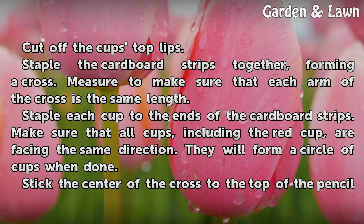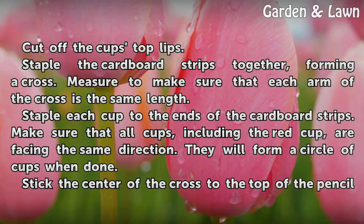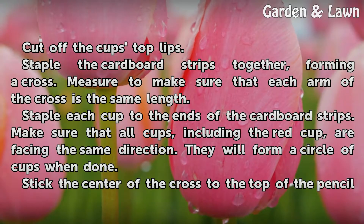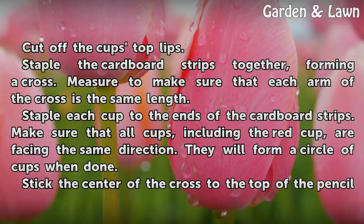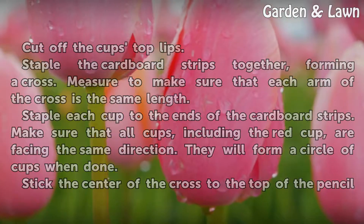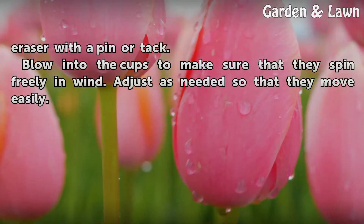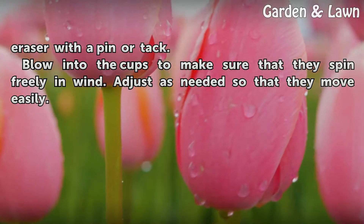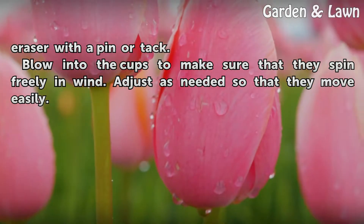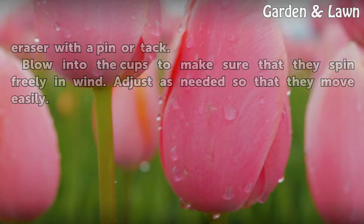Staple each cup to the ends of the cardboard strips. Make sure that all cups, including the red cup, are facing the same direction — they will form a circle of cups when done. Stick the center of the cross to the top of the pencil eraser with a pin or tack. Blow into the cups to make sure they spin freely in wind, and adjust as needed so that they move easily.